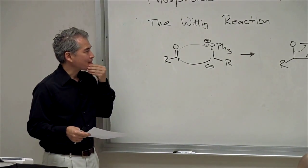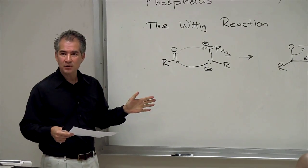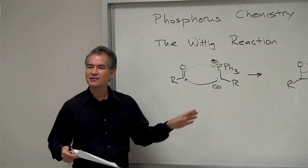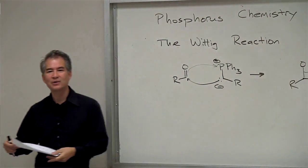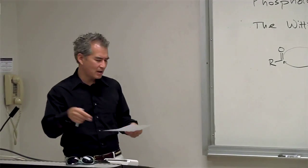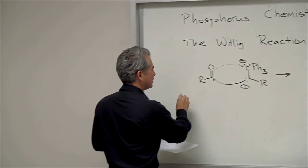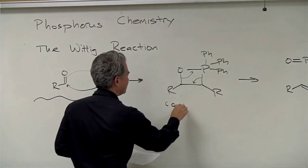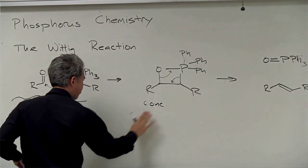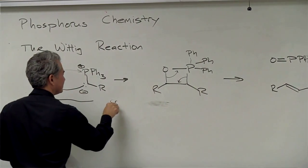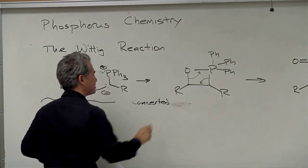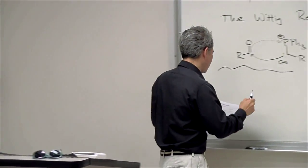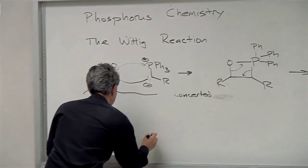In about a week and a half we're going to start talking about pericyclic reactions. This looks like something called a 2+2 cycloaddition reaction, and we could describe it that way — I'll get into that nomenclature shortly. The key point is that this process is concerted — it's a concerted cycloaddition reaction. I'm not going to call it pericyclic; I'll reserve that terminology for something different.